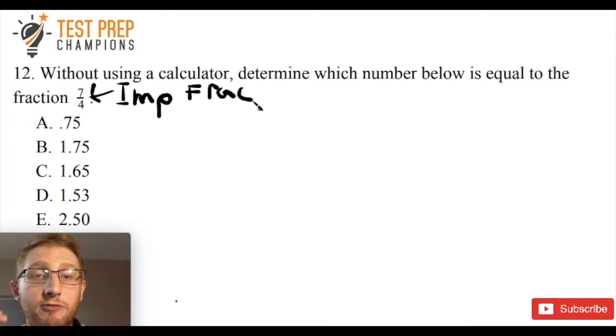The number on top of a fraction is called the numerator and the number on the bottom is the denominator. So in this case, 7 is our numerator and 4 is the denominator. 7 over 4. Numerator is bigger than the denominator, so it's an improper fraction.